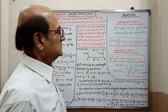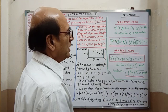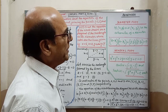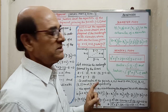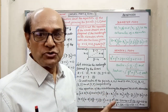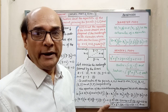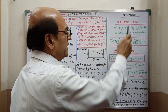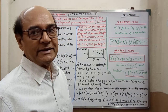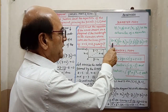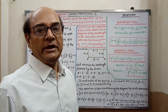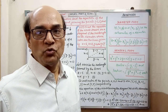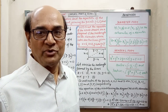Diameter form. If x1, y1 and x2, y2 be the extremities of a diameter — that means the coordinates of the two ends of the diameter are given as x1, y1 and x2, y2 — then the equation of the circle will be: (x minus x1)(x minus x2) plus (y minus y1)(y minus y2) equals 0.